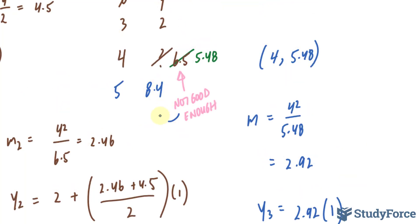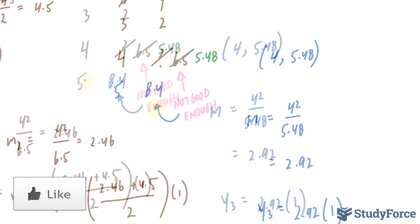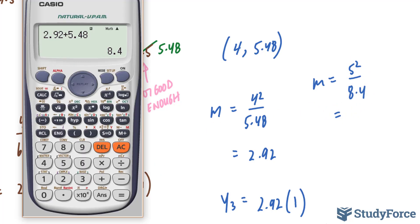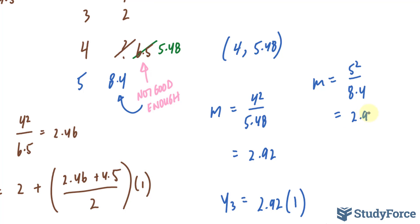And I'll write that here: 8.4. But once again, this is not good enough, and we have to correct this. The way we correct it is we use the same method as before. We use these points to find the slope: m = x²/y, so 5²/8.4. Let's see what that gives us: 25 ÷ 8.4 = 2.97.